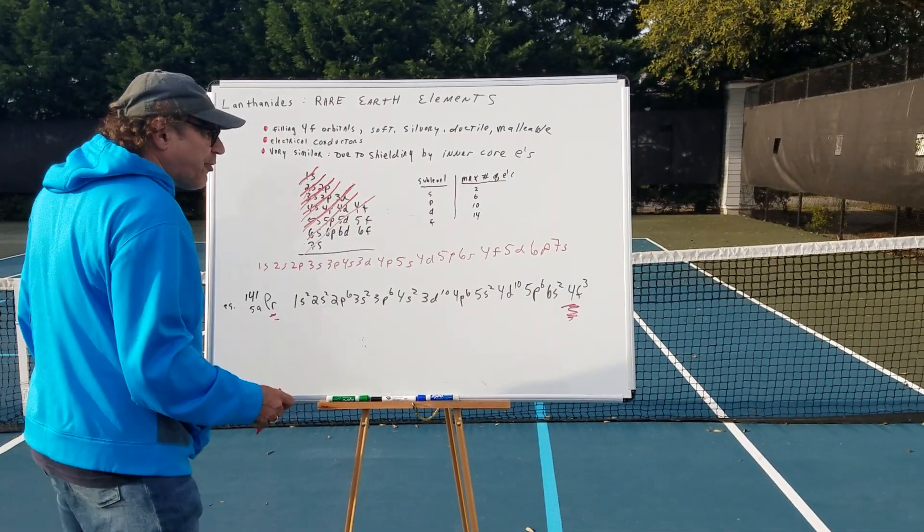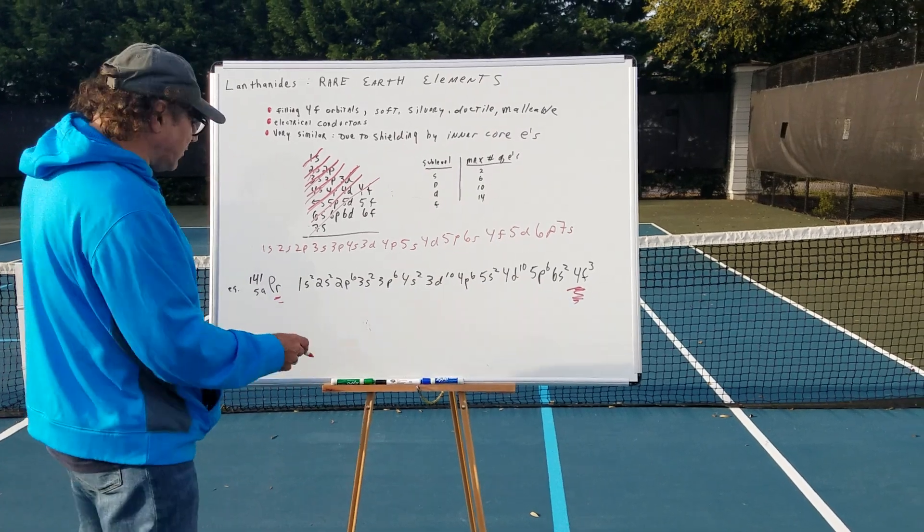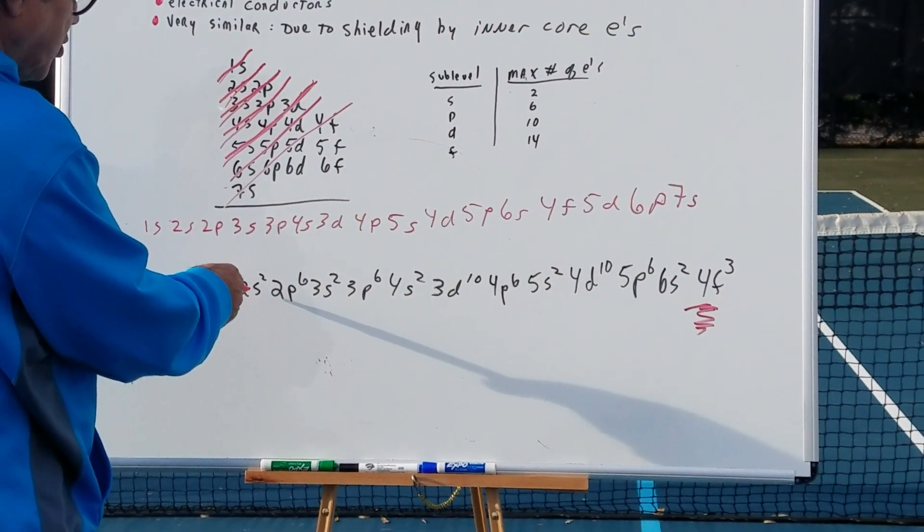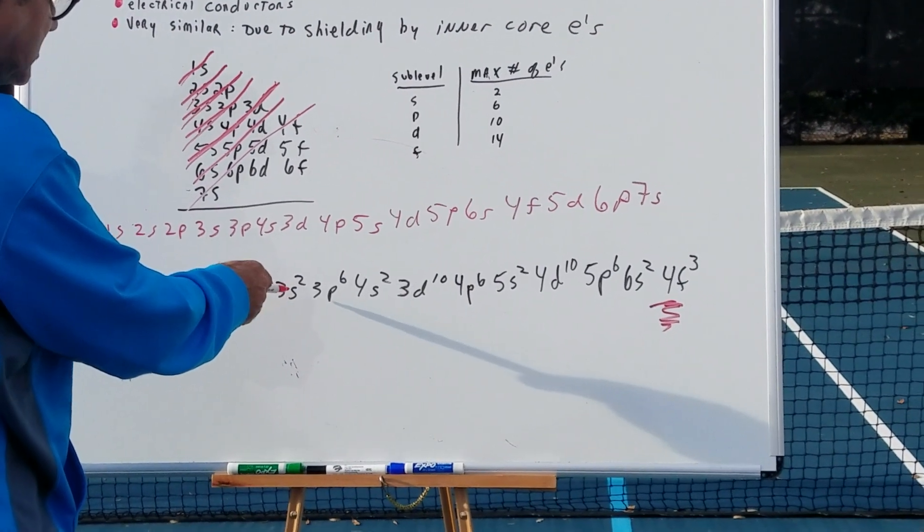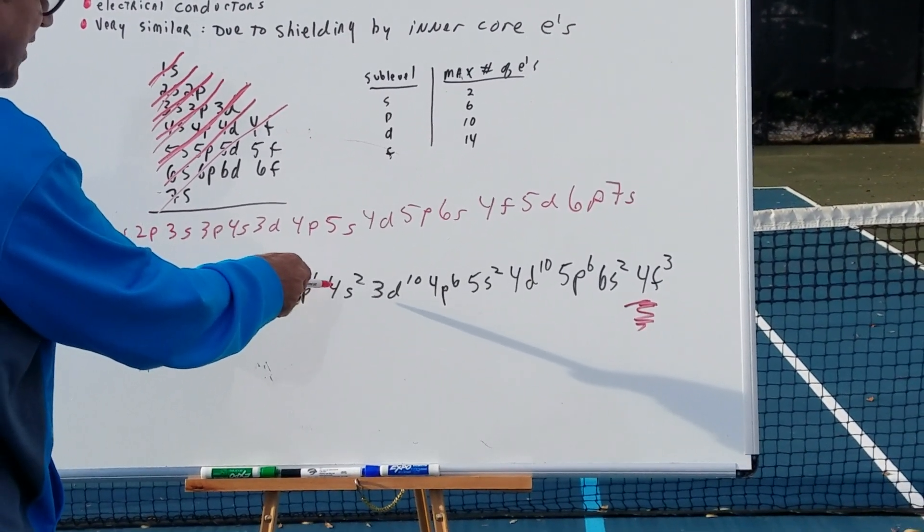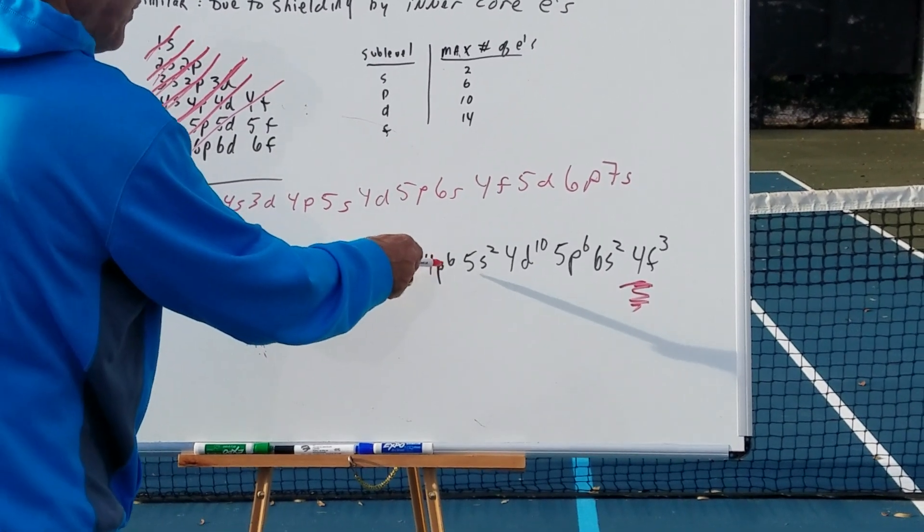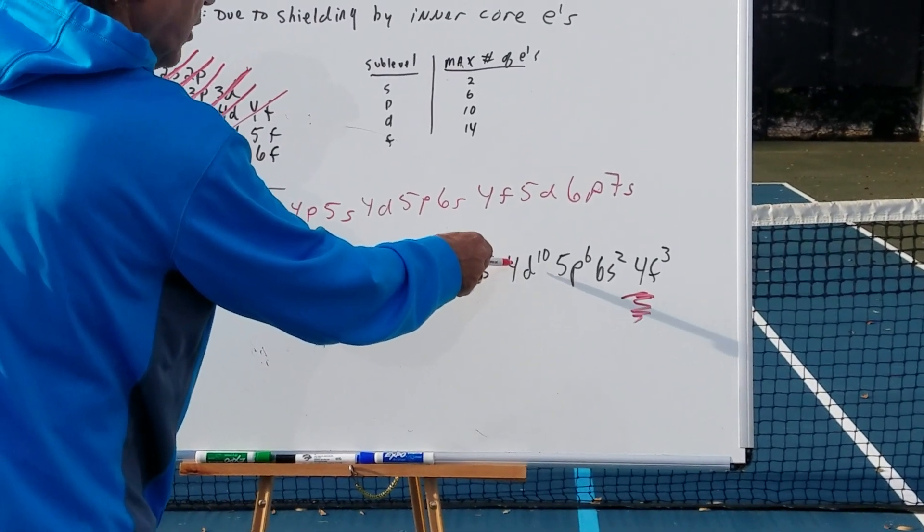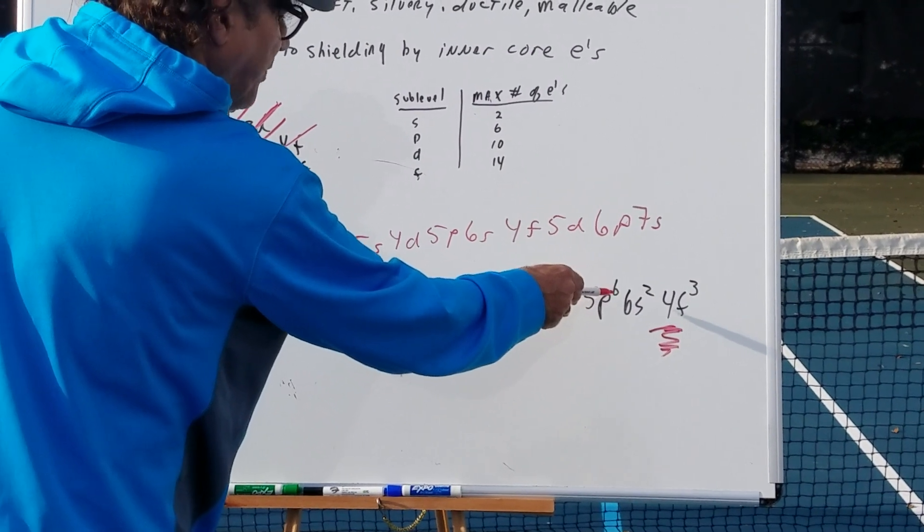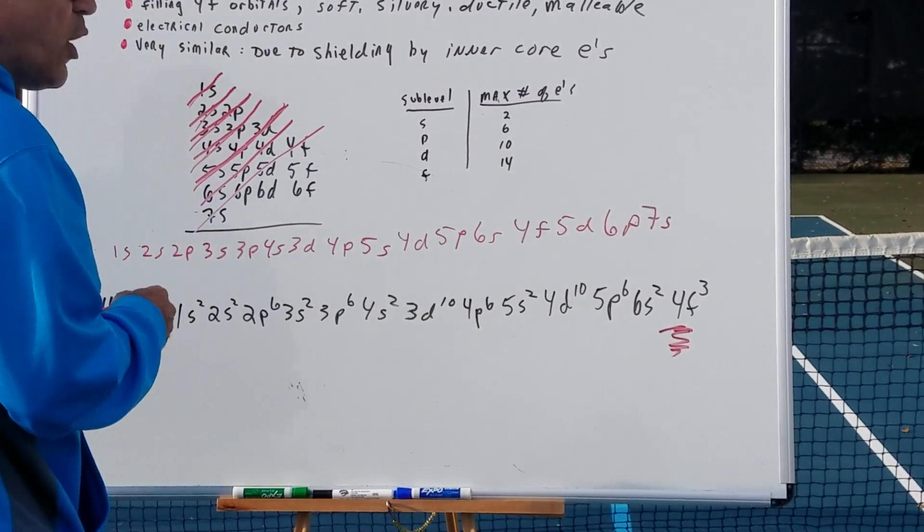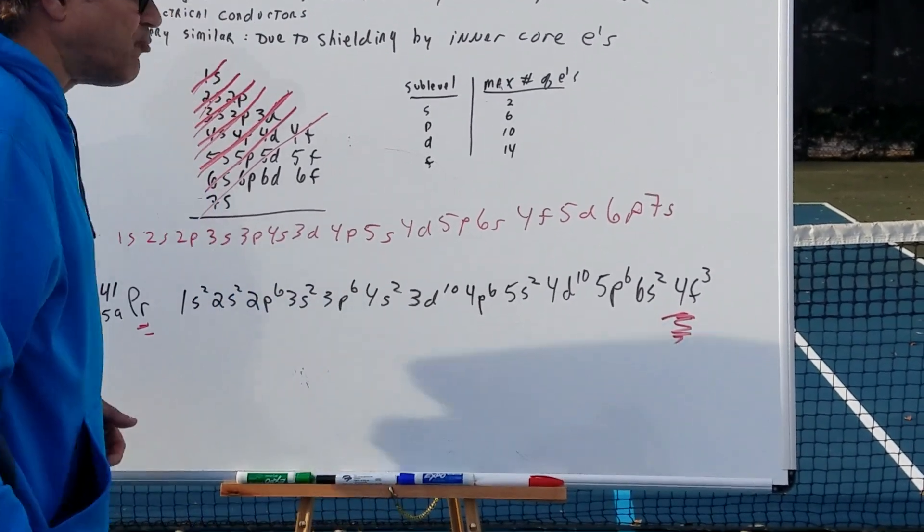So we're going to have this in front of us as a guide. Don't memorize it. So we're going to shoot for 59 and we get 1s2, 2s2, 2p6, 3s2, 3p6, 4s2, 3d10, 4p6, 5s2, 4d10, 5p6, 6s2, and there it is, 4f3 with 3 unpaired electrons.